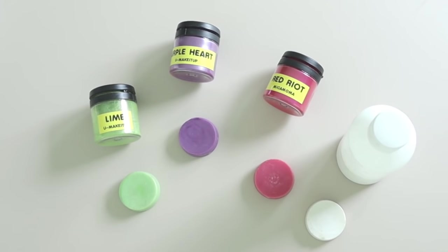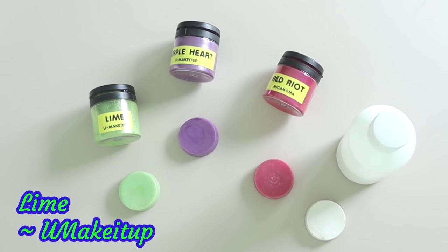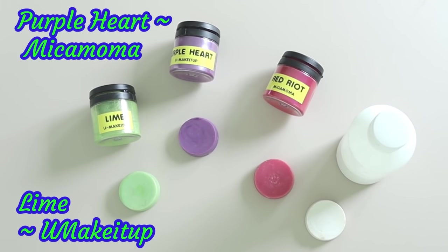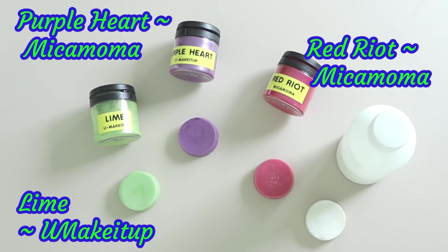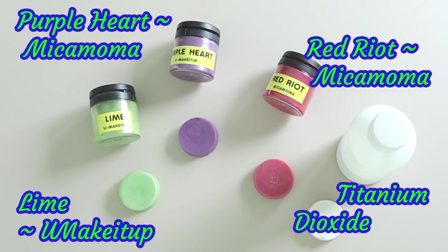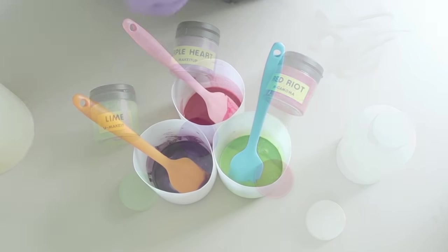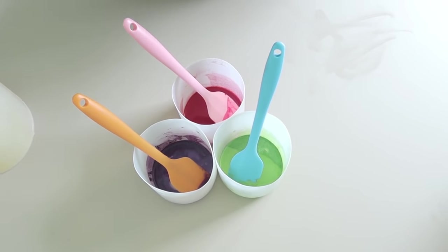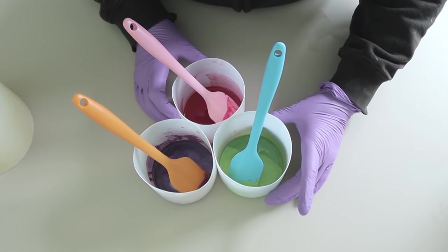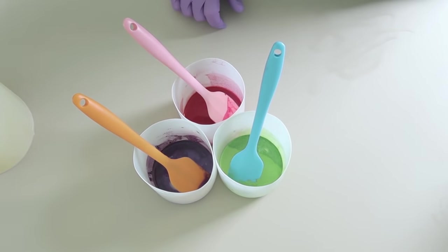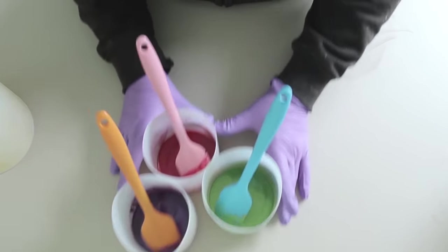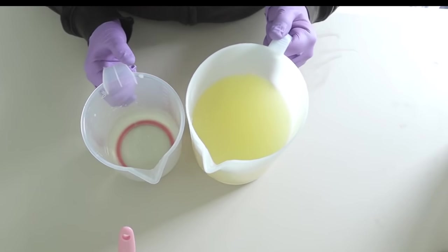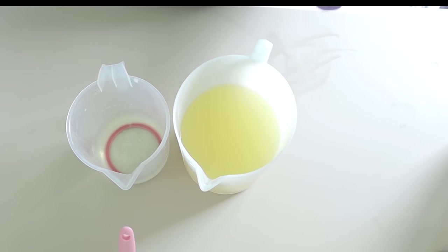So the colors I'm going to be using today are lime from You Make It Up, then purple heart and red riot both of those are from mica mama, and some titanium dioxide. So I've mixed up each of my colors into a little bit of olive oil, any lightweight oil will do, just make sure they're nicely dispersed and then I'm going to make up a full loaf bar of one type of soap.